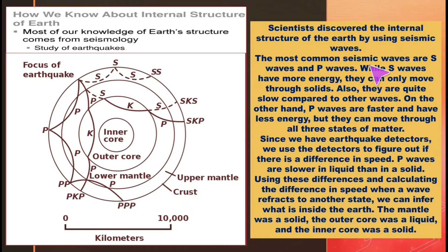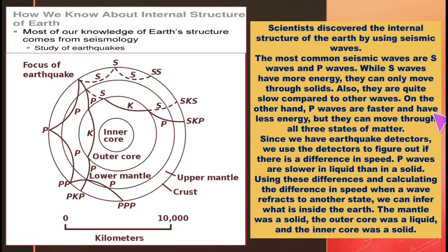The most common seismic waves are S waves and P waves. While S waves have more energy, they can only move through solids and are quite slow compared to other waves. On the other hand, P waves are faster and have less energy, but they can move through all three states of matter.